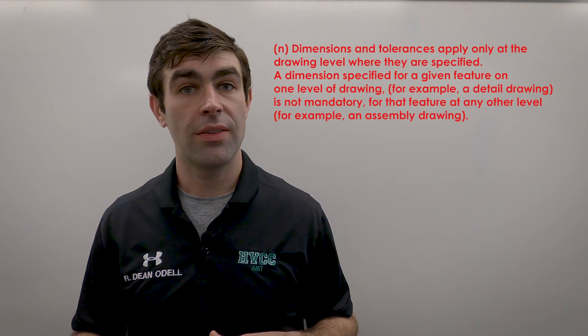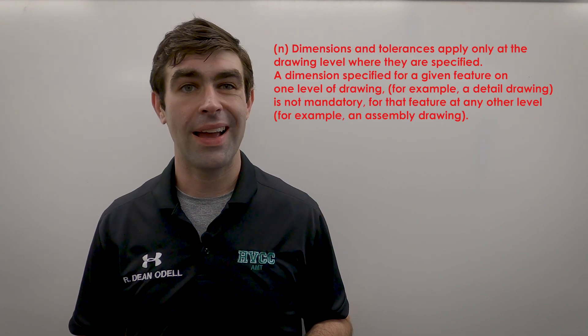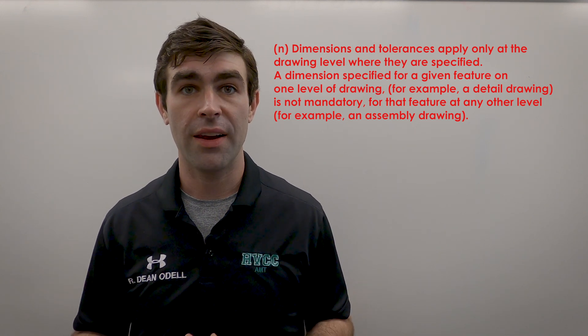Rule N: dimensions and tolerances only apply at the drawing level where they were specified. If you have an assembly with detail parts, most dimensions and tolerances are on the detail parts. You don't re-inspect those dimensions again at the assembly drawing level — you don't have to inspect every part in the assembly after it's assembled. There may be some overall assembly dimensions, but you don't require inspection of detail part features at the assembly level.